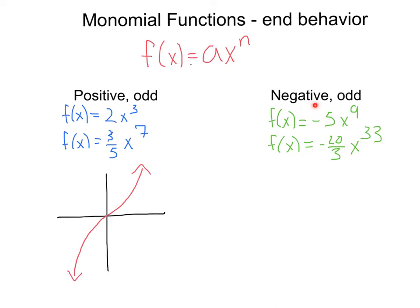Now when our a is negative and our exponent is odd, like negative 5x⁹ or negative ⅔x³³, again, since we have that odd exponent, the end behaviors are going to be going in opposite directions, but in this case it's going to be flipped. Here we're going to be decreasing the whole way, and our left end behavior is going to be positive infinity, our right end behavior is going to be negative infinity.